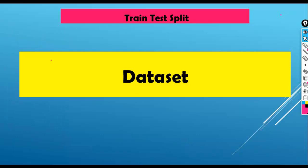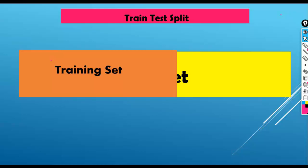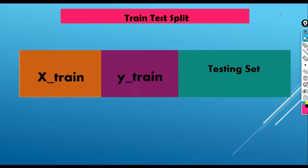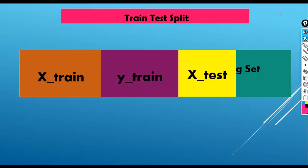In the train-test split, we divide our dataset into two subsets: one for training and one for testing. The training set is further divided into X_train and Y_train, and the testing set is divided into X_test and Y_test. So our train-test split divides our data into four parts: X_train, Y_train, X_test, and Y_test.